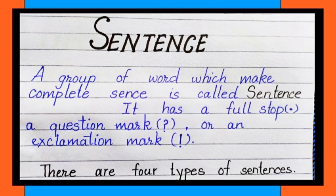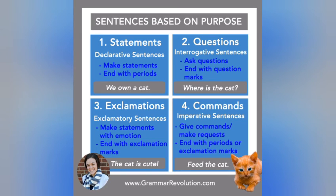A sentence jo complete sense deta hai, use sentence kehte hain. The declarative sentence, also called an assertive sentence, makes a statement and ends with a period. An interrogative sentence asks a question. An exclamatory sentence makes a statement with emotion and ends with an exclamation mark. For example: 'The cat is cute.'